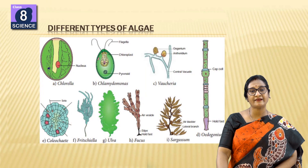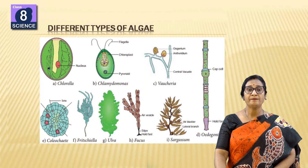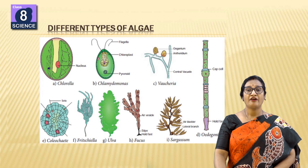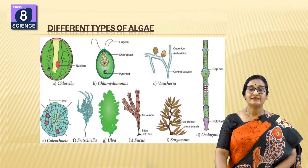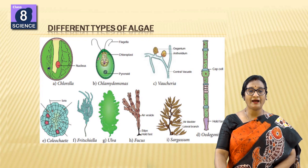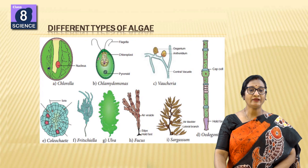Types of algae include Chlorella, Chlamydomonas, Vaucheria, Volvox, Sargassum, Fucus, Ulva, and Spirogyra.